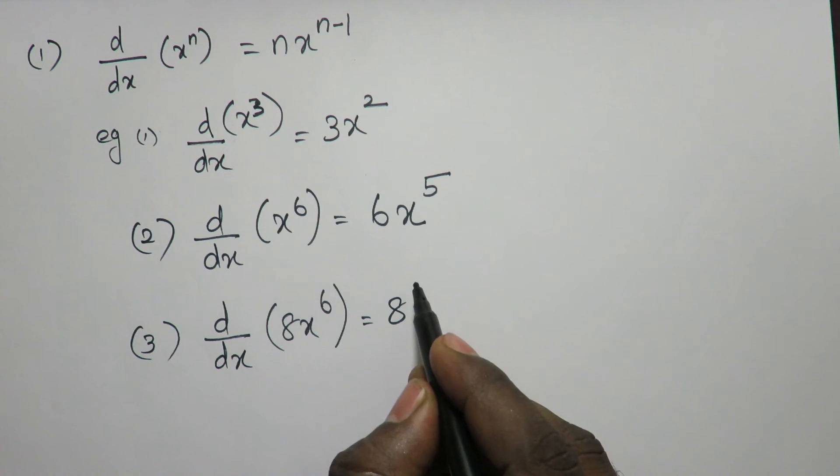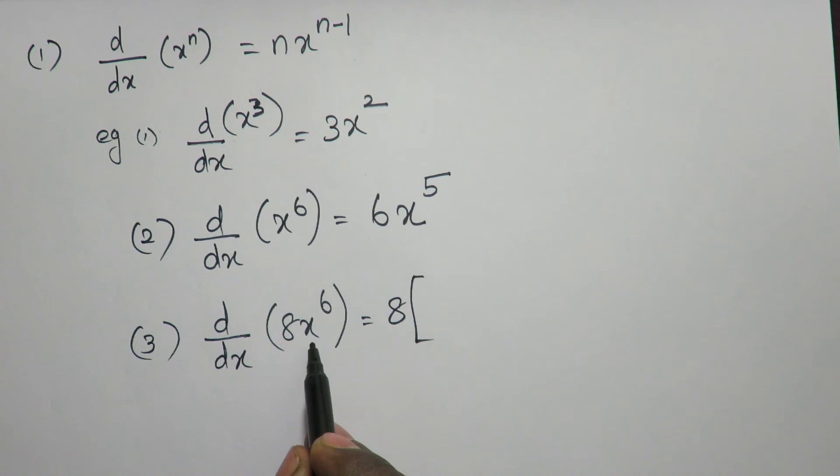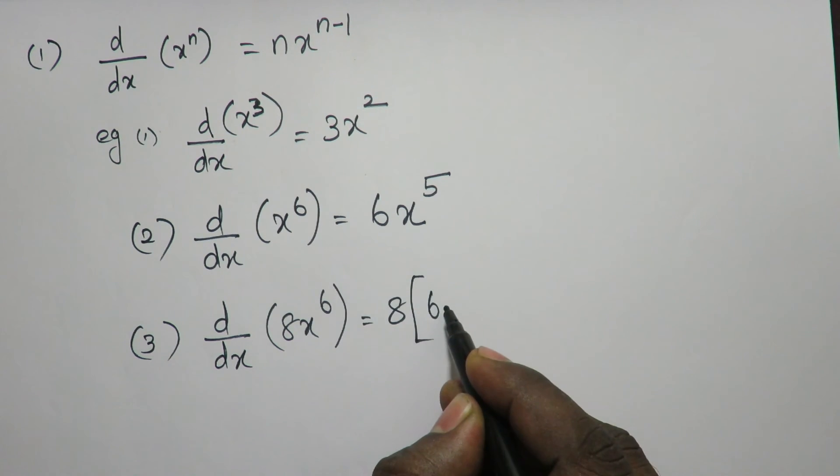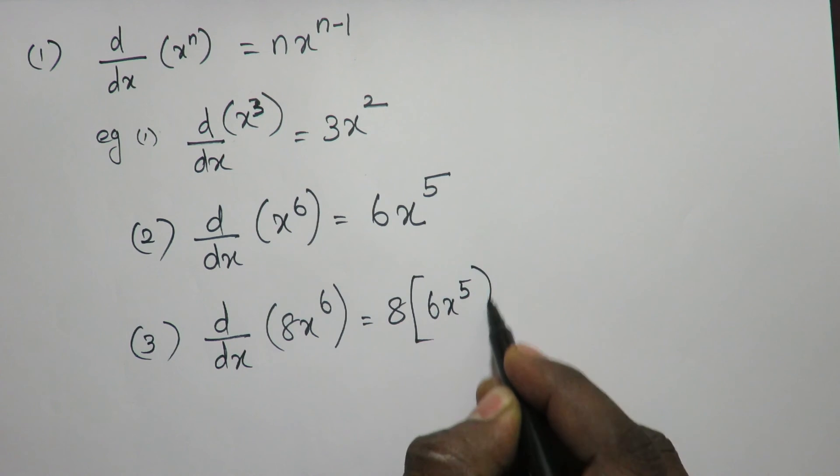So, keep the constant as it is, since it is in a product. Differentiate x power 6. What is differentiation of x power 6? It is 6x power 5.